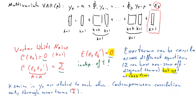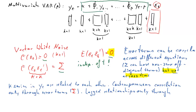We are building a VAR(P) process for the k elements of yt because we think they may be related to each other also through time. The contemporaneous relationship will come only through the variance-covariance matrix of the error terms — the sigma — but lagged relationships will come through the capital phi coefficient matrices. That's the conditional expectation part of our VAR(P) process.